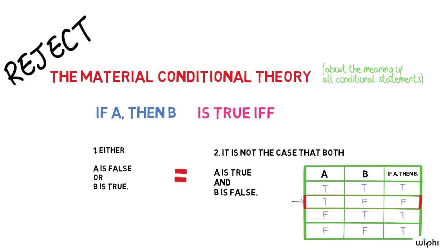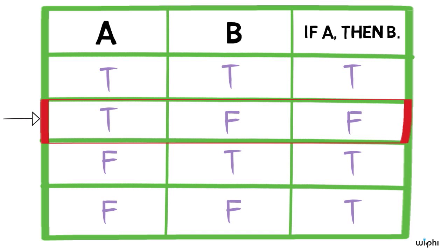What's underlying both of these issues is the following problem. The material conditional theory provides too few opportunities for conditionals to be false. Alternatively, it makes it too easy for conditionals to be true.